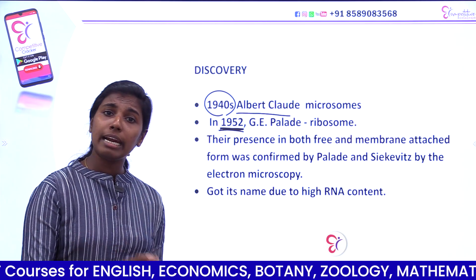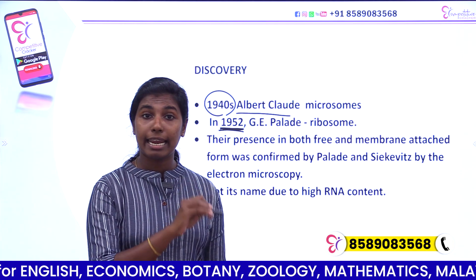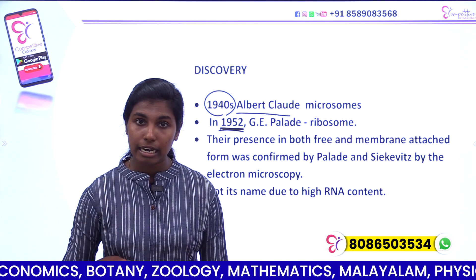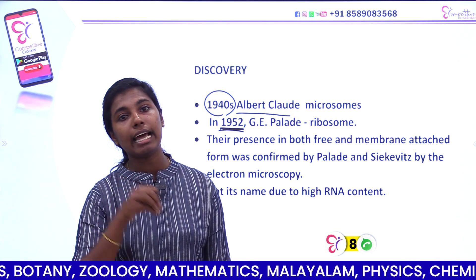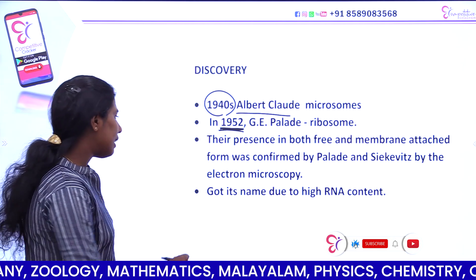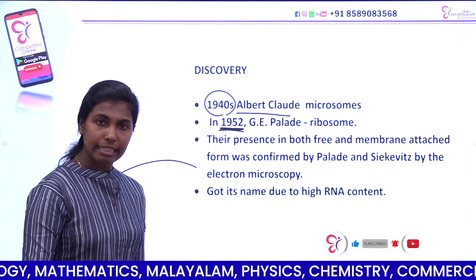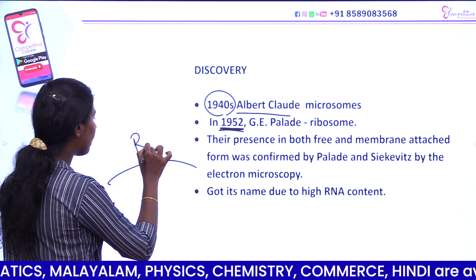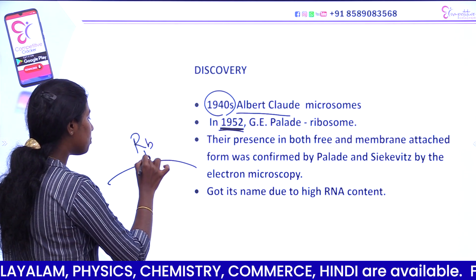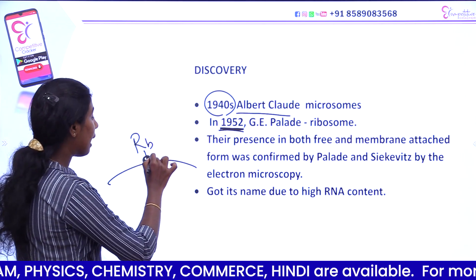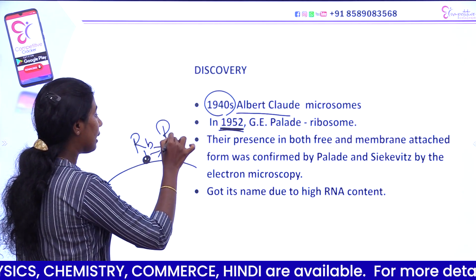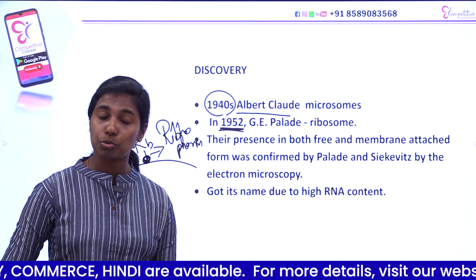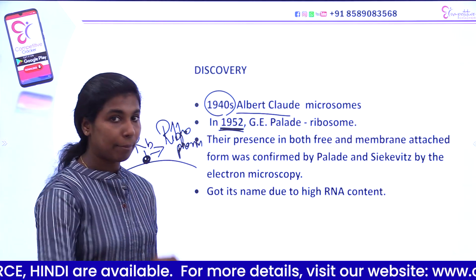Ribosomes have free items in the cytoplasm. The endoplasmic reticulum has ribosomes attached to it. Free ribosomes are found floating in the cytoplasm. If ribosomes are attached to the membrane, a protein called riboforins helps facilitate that attachment.